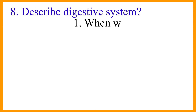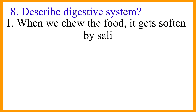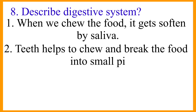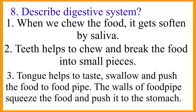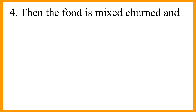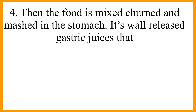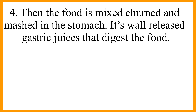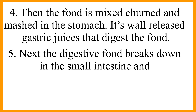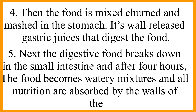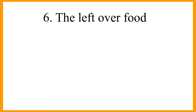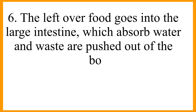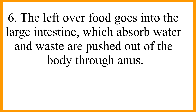Describe the digestive system. When we chew the food, it gets softened by saliva. Teeth help to chew and break the food into small pieces. The tongue helps to taste, swallow, and push the food to the food pipe. The walls of the food pipe squeeze the food and push it to the stomach. Then the food is mixed, churned, and mashed in the stomach. Its walls release gastric juices that digest the food. Next, the digested food breaks down further in the small intestine. After about 4 hours, the food becomes a watery mixture and all the nutrients are absorbed by the walls of the small intestine. The leftover food goes into the large intestine, which absorbs water, and waste is pushed out of the body through the anus.